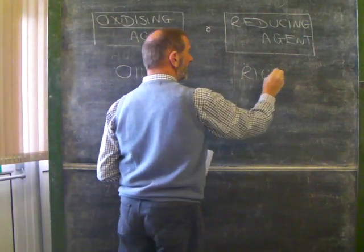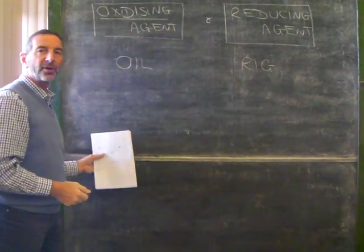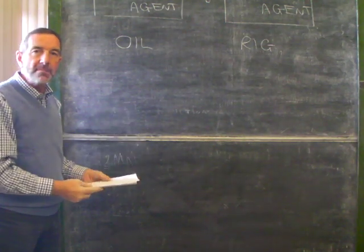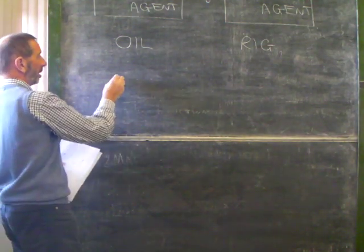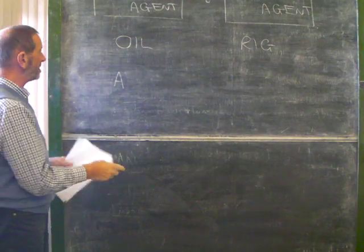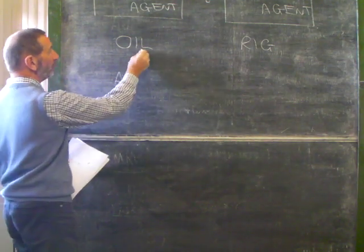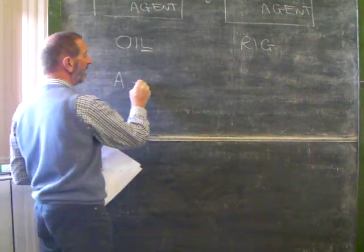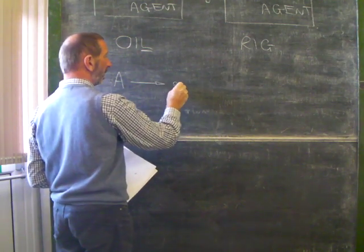Oxidation is loss. Reduction is gain. So let's take an example of an oxidation. Let's take some imaginary substance, substance A. Some chemical A and it's being oxidised. It's losing electrons. So A is losing electrons.